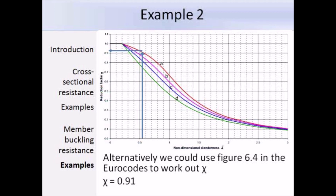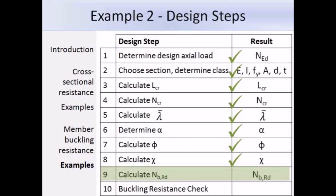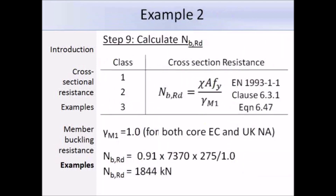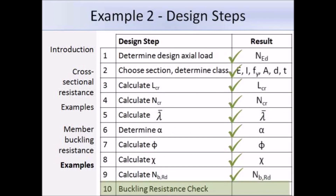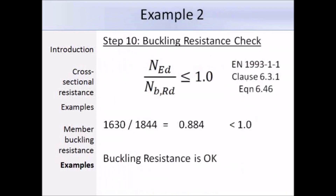Now we calculate the design buckling resistance Nb,Rd. The section is class 1 so we use equation 6.47. With χ = 0.91, gross area = 7370 mm², yield strength = 275 N/mm², and partial factor γM1 = 1, the design buckling resistance is 1844 kN. Comparing to the design compression load of 1630 kN, the ratio is 0.884, which is less than 1. Therefore the section can withstand the compression force and can be adopted.